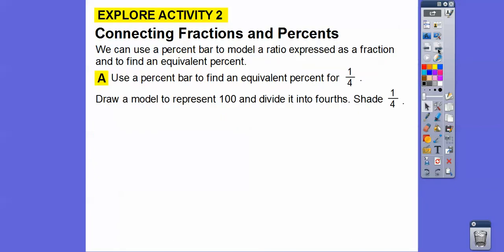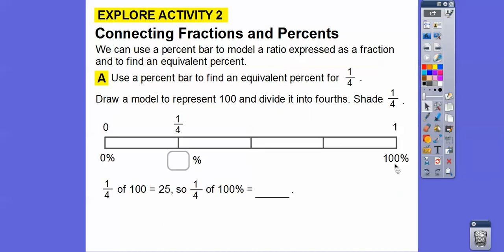We can use a percent bar to model a ratio expressed as a fraction and to find equivalent percents. We're going to use a percent bar to find an equivalent percent of one-fourth. Draw a bar model representing 100% divided into four equal pieces. One-fourth of 100% is 25%, so one-fourth is equivalent to 25% — because 25 over 100 is the same as one-fourth.